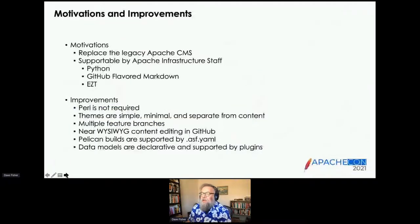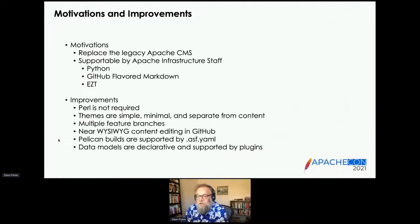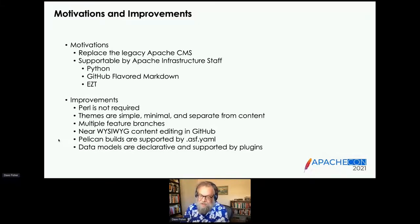I was involved in a project for Infra to replace the Apache CMS, which is a legacy system. I had done openoffice.org into the CMS 10 years ago and also moved it out of that. We had some choices, but the goal was to do something supportable by the Apache infrastructure staff and had to be in Python. GitHub-flavored Markdown was preferred as well.